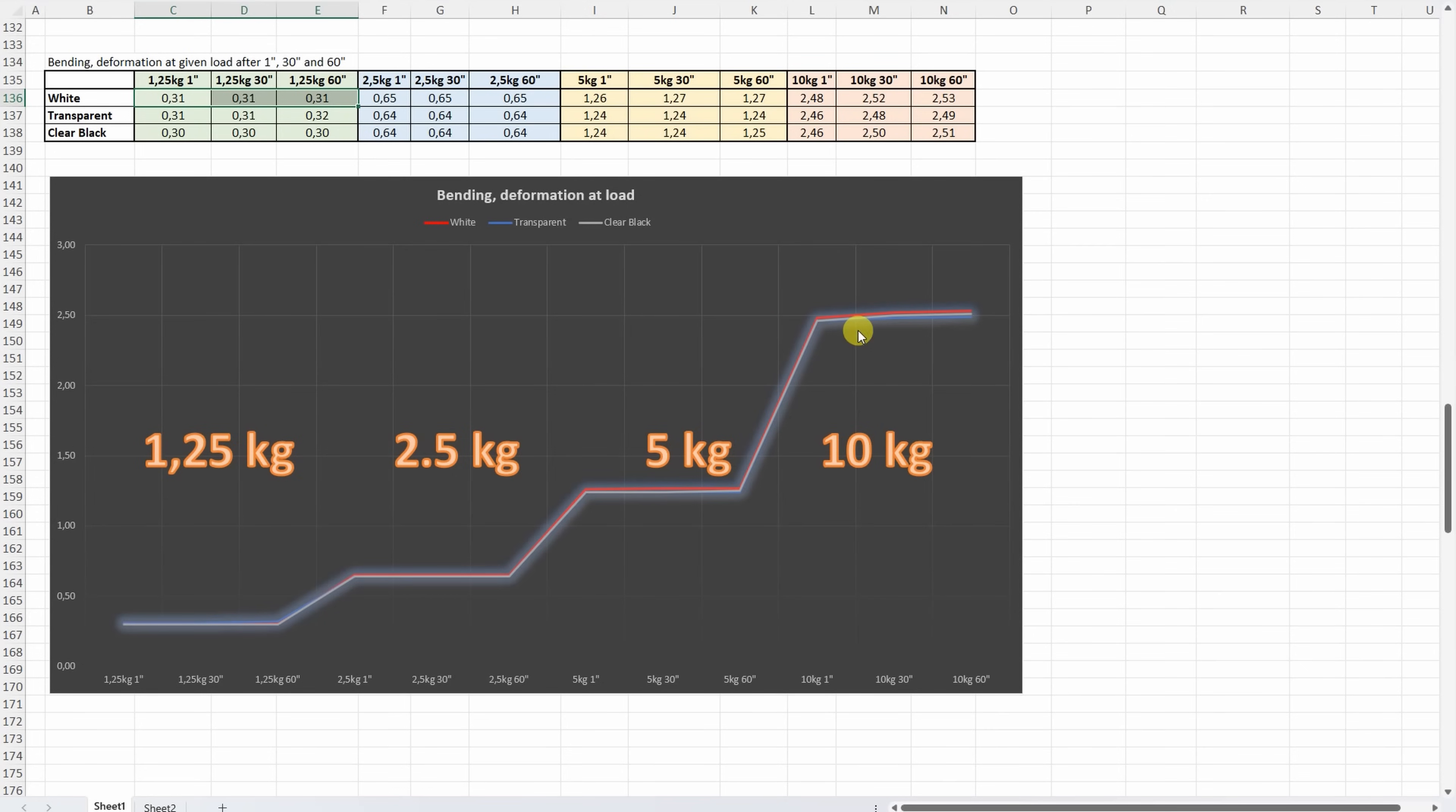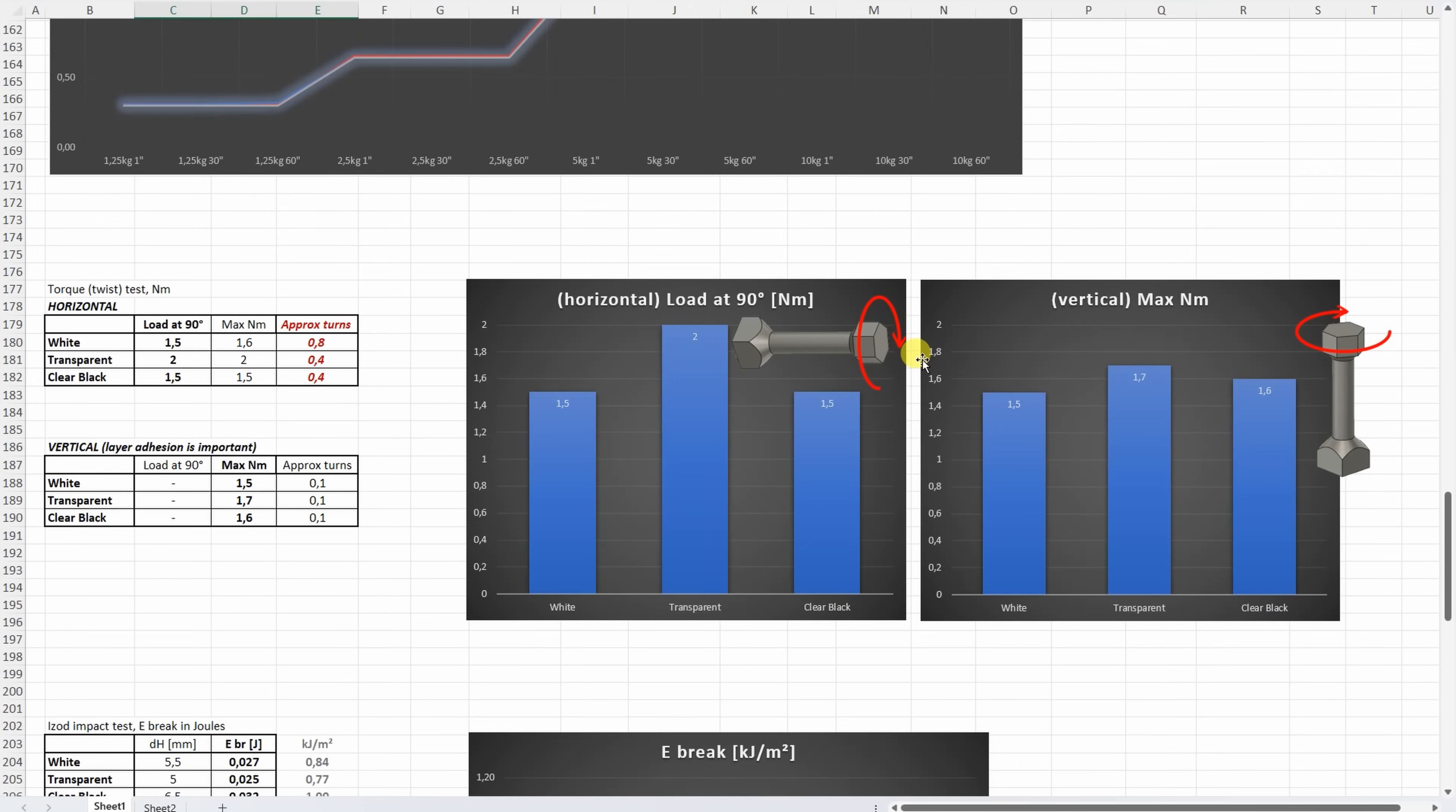But what is more interesting here, that even under 10 kilograms, this part of the line is nearly horizontal. This means it doesn't have any additional deformation during this time, even under 10 kilograms. Very stiff material.